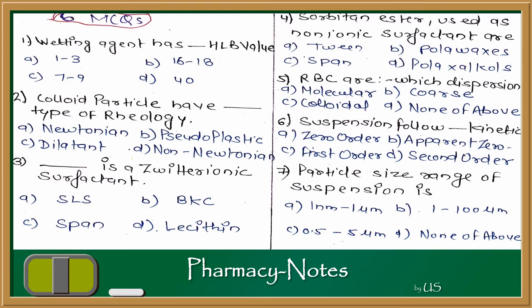Then, sorbitan ester used as non-ionic surfactant. Who is sorbitan ester? What is the other name of it? If you remember, Tween was the derivative of sorbitan esters. These two are in the same category. So Span is the sorbitan ester. The answer is C.